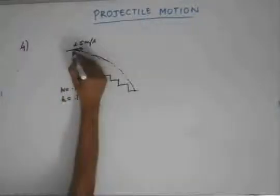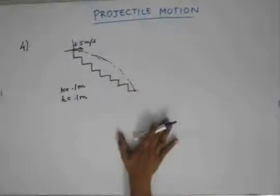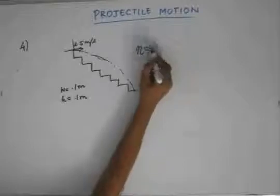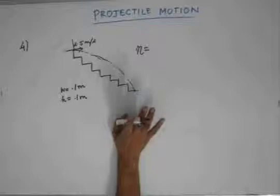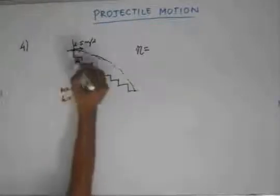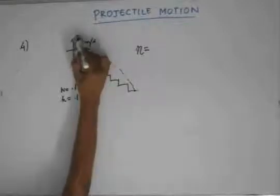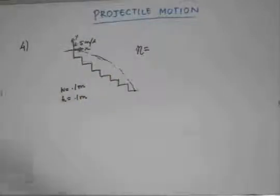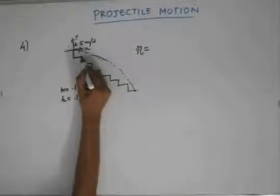Let the projection point be the origin with an xy coordinate system. The x-axis points horizontally and the y-axis points upward as positive. From the origin, moving 0.1 meter horizontally and 0.1 meter down gives the first stair corner.